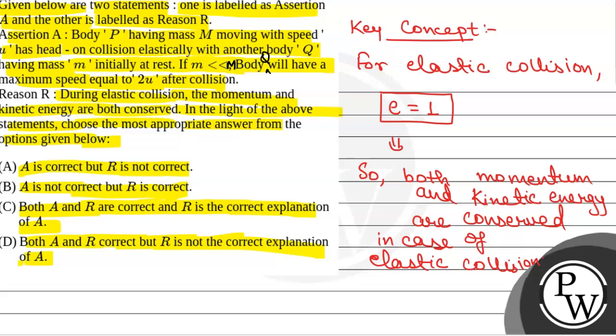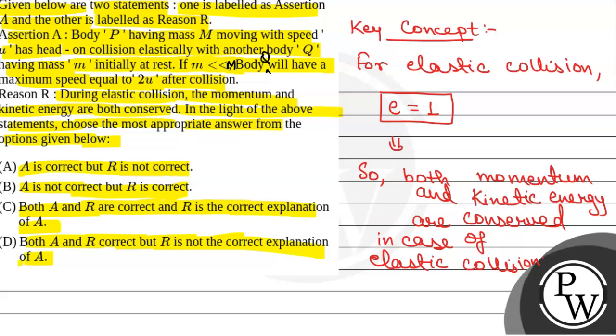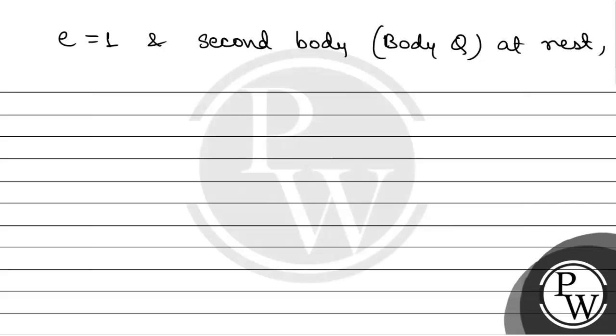Now, for e is equal to 1 and second body at rest, where body Q with mass small m is initially at rest, V2, that is final velocity of body Q, will be 2M1U1 by M1 plus M2, that is 2U into M divided by M plus m.